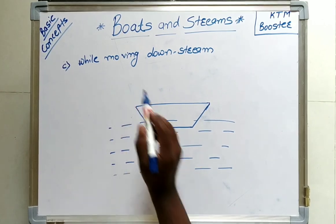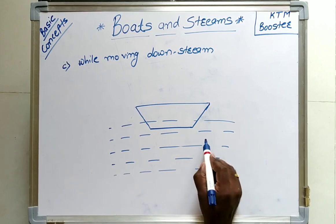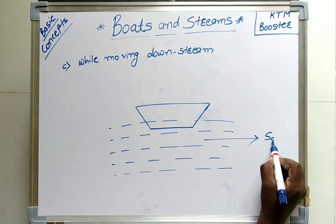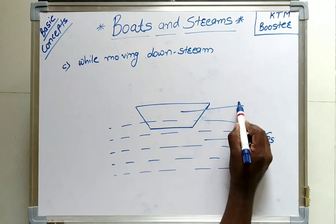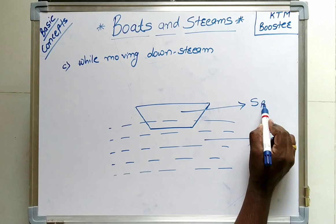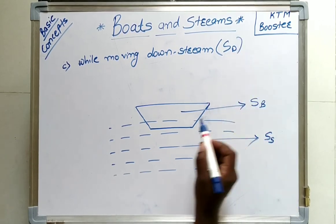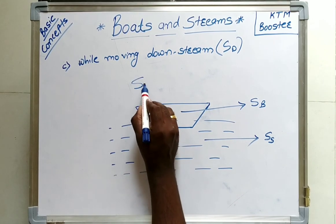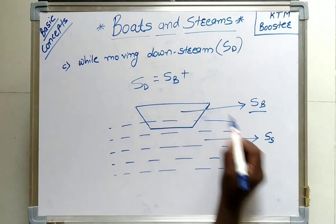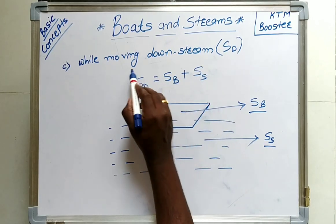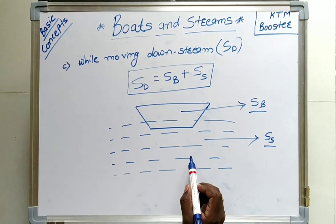Next concept: while moving downstream, that is with the flow of water — if we have the speed of stream SS and the speed of boat SB, then the downstream speed SD is given by SD equals speed of boat plus speed of stream. In this way, we can calculate the downstream speed of the boat.